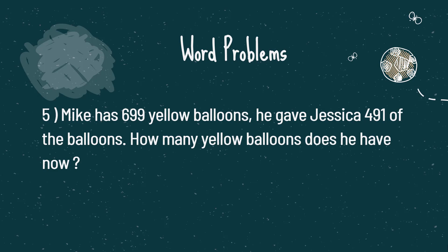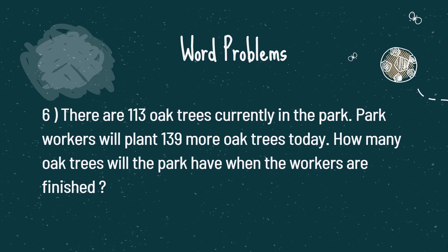Problem number six. There are 113 oak trees currently in the park. Park workers will plant 139 more oak trees today. How many oak trees will the park have when the workers are finished?